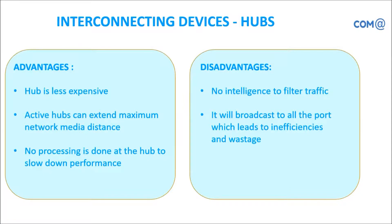Advantages of hub: it is less expensive compared to next-level devices, covers a maximum distance of 100 meters, and since no processing is done in the hub — it only does catch and dispatch — it will be faster. Disadvantages: it doesn't have any intelligence to filter traffic, no switching table, no MAC filtering. It broadcasts to all ports, which leads to inefficiencies and wastage. That's the reason we call it a collision domain.